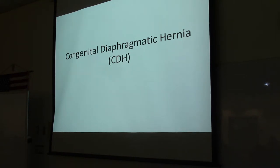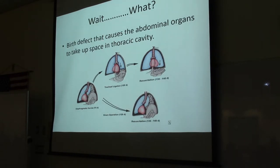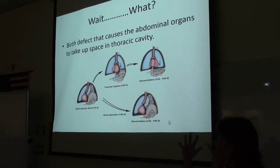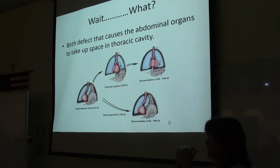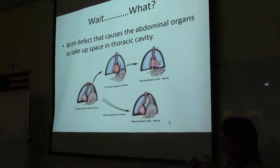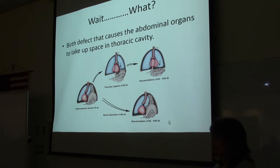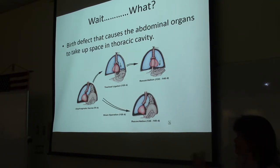Next we have congenital diaphragmatic hernia. During fetal development, the diaphragm begins as two separate leaves that grow together to form the diaphragm. Sometimes they don't come together completely and are left open. When the diaphragm doesn't close completely, there's nothing to separate the thorax from the abdominal organs. So the abdominal organs, as they're growing, just go wherever there's room — and that's up into the thorax.